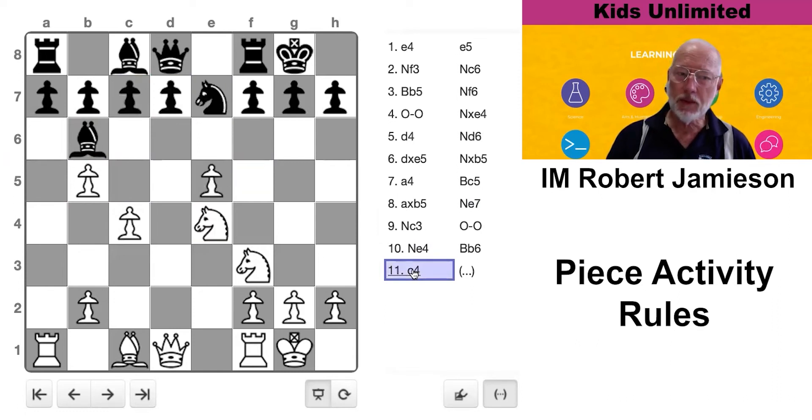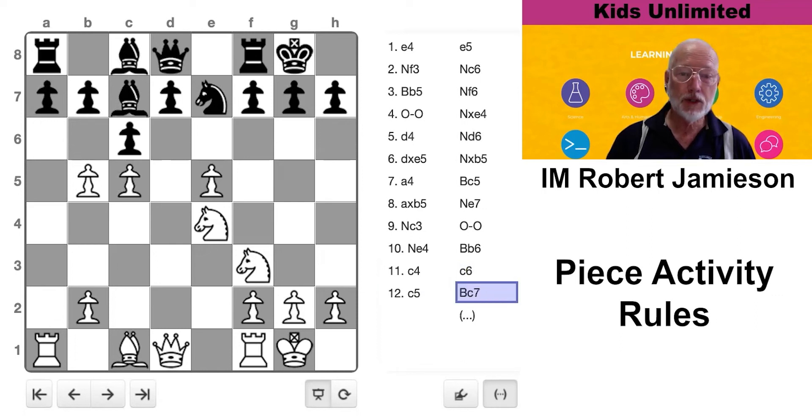But instead, he wanted to hang on to his bishop, so he chose c6. Now, of course, my eyes lit up because I thought, you beauty. c5, chase him away. Bishop c7.